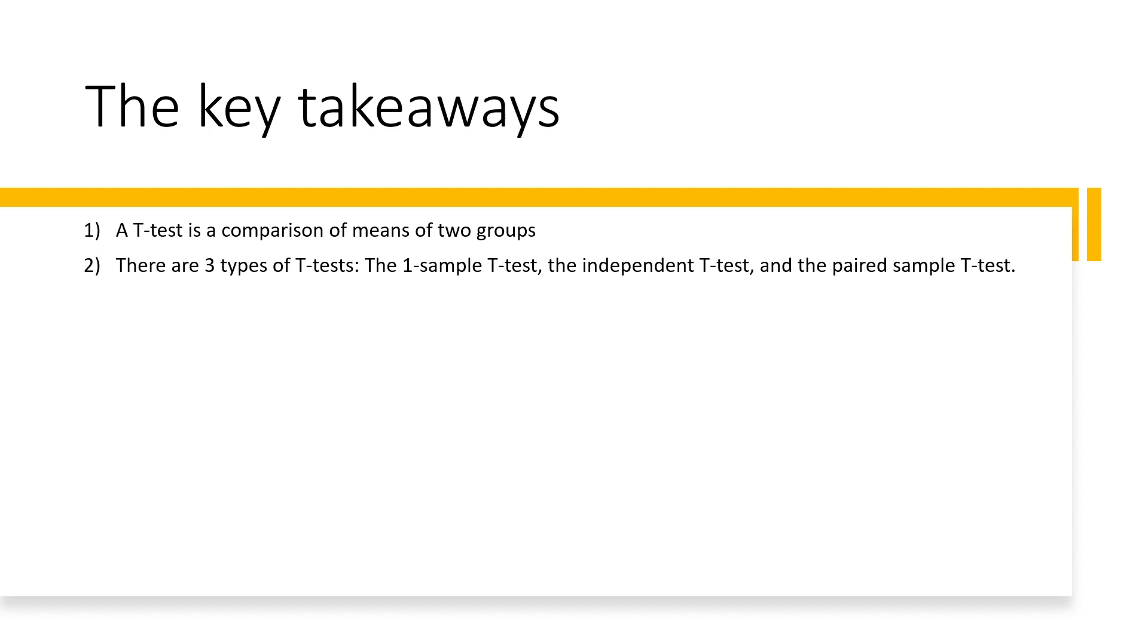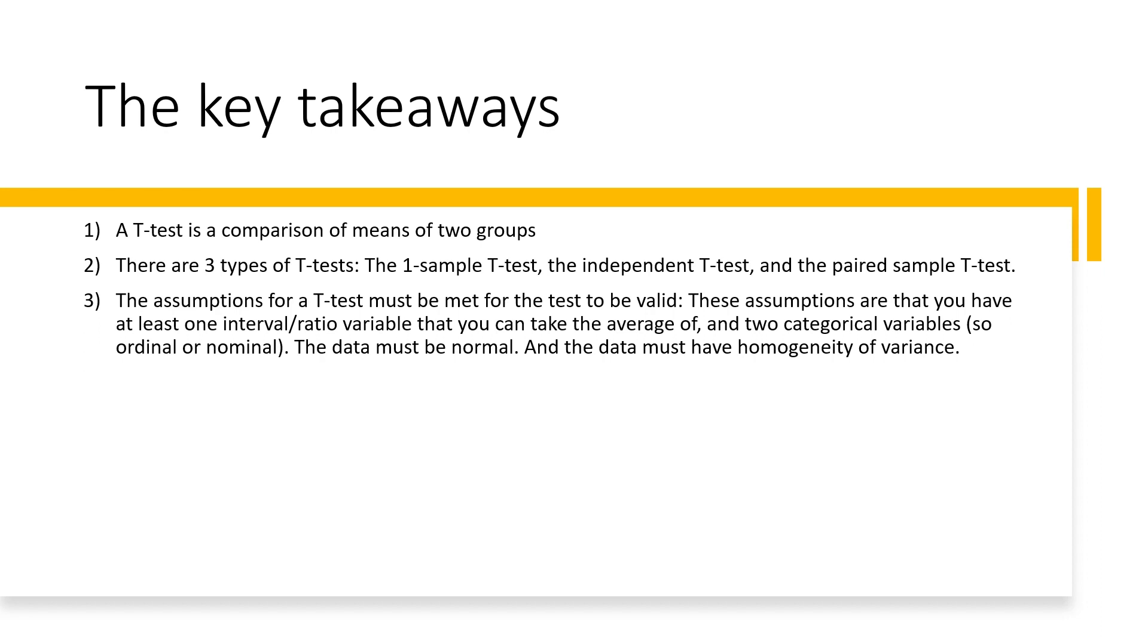There are three types of t-tests, the one-sample t-test, the independent t-test, and the paired-sample t-test. Number 3. The assumptions for a t-test must be met in order for the t-test to be valid. These assumptions are that you have to have at least one interval or ratio variable that you can take the average of, and two categorical variables, so ordinal or nominal. The data must be normal, and the data must have homogeneity of variance.